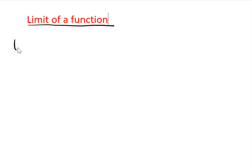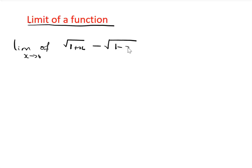If we have the limit as x tends to 0 of the square root of 1 plus x, minus the square root of 1 minus x, divided by x. Assuming we are asked to find the limit of this function as x tends to 0, we cannot substitute x equal to 0 into this equation, otherwise it will become undefined.